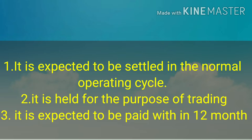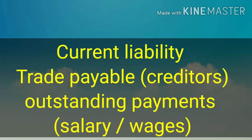Current liability is defined in a similar way. A liability is current when it is expected to be settled in the normal operating cycle, the liability is held primarily for the purpose of trade, and it is expected to be settled within 12 months. The main components of current liabilities are trade payables, creditors, and outstanding payments such as salary or wages.